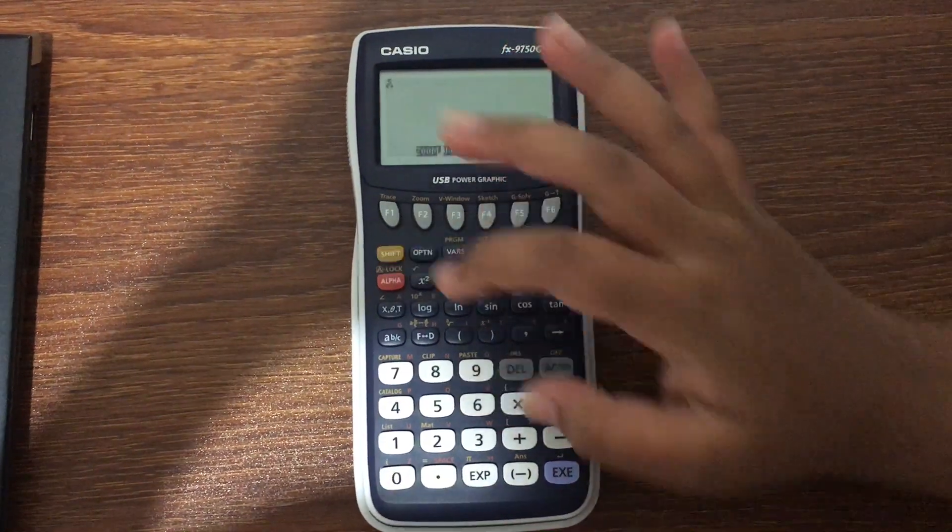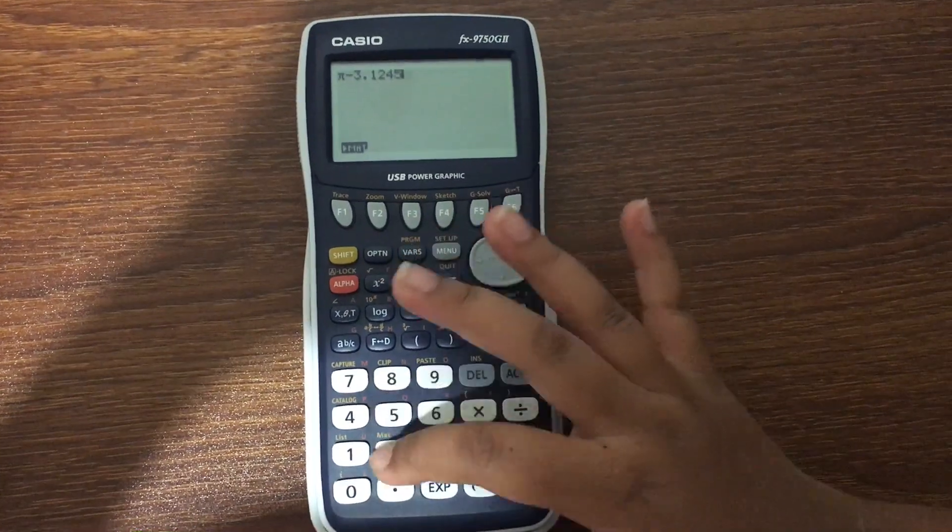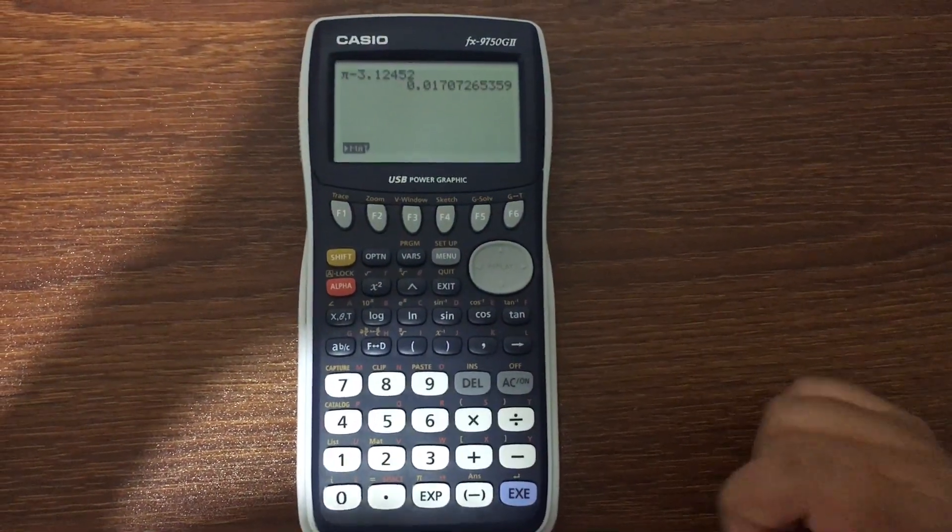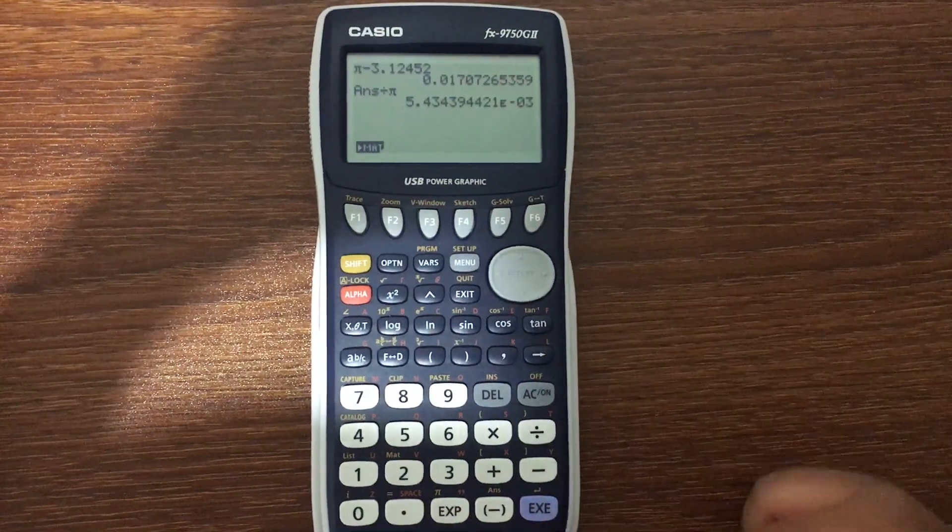Now let's see how accurate our answer is. So π minus our estimation of π, input 3.12452, equals 0.01707. Now we divide our answer by π.